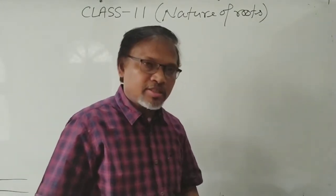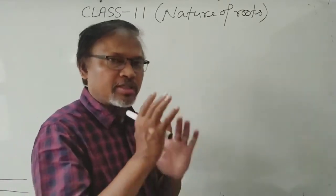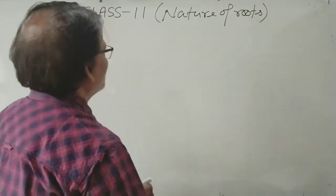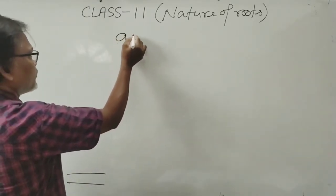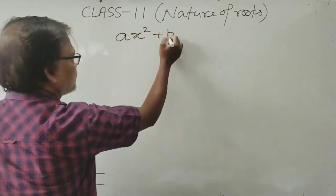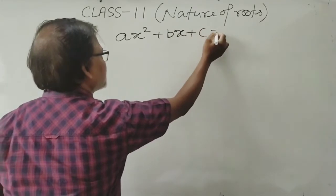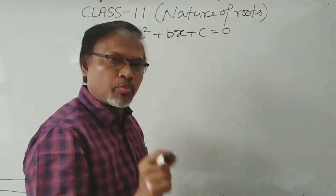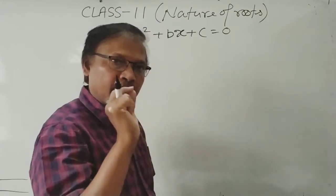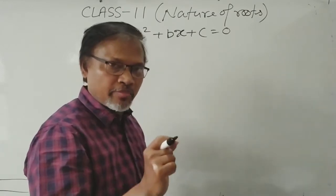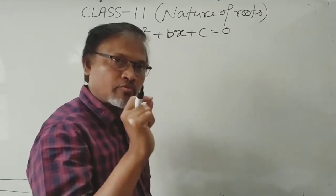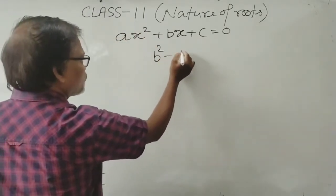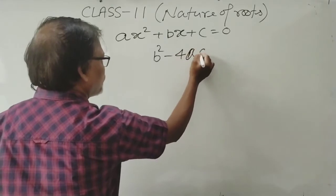Here there are some different things about the nature of roots. As you know, in the quadratic equation AX² + BX + C = 0, the nature of roots depends upon the discriminant, which is B² - 4AC.